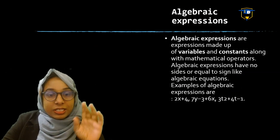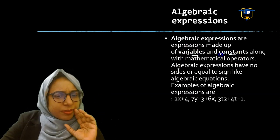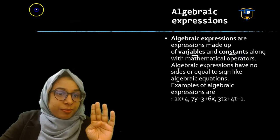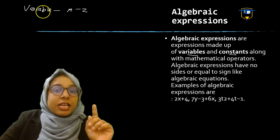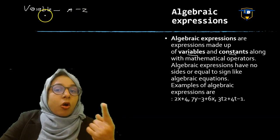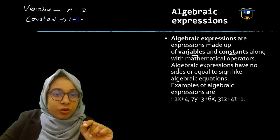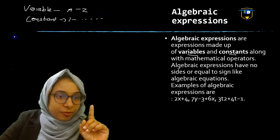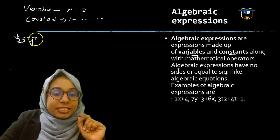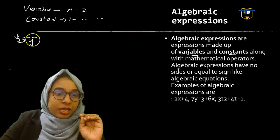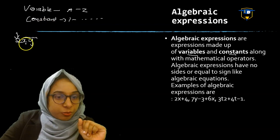Algebra Expressions consist of variables and constants. Variable means alphabets, A to Z — any alphabet. So an expression that contains alphabets and constants is called an Algebra Expression. Constant means numbers like 1, 2, etc. For example, 2xy — it contains constant 2 and variables x and y.